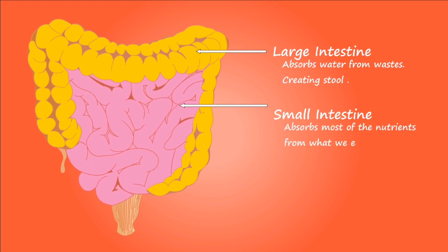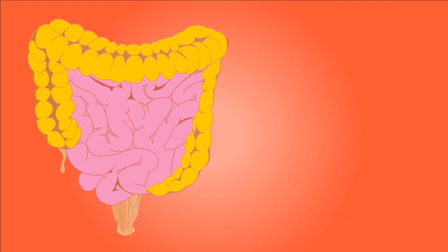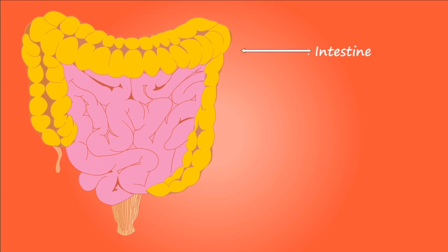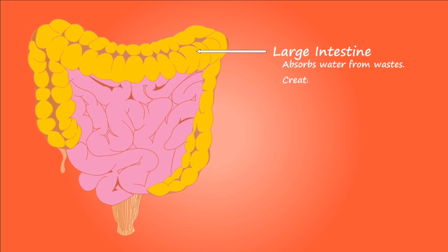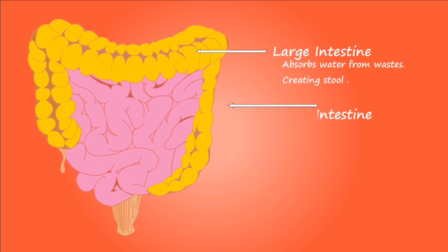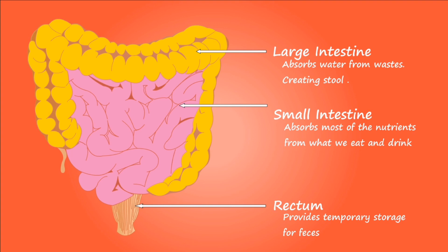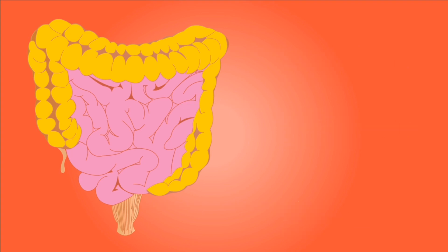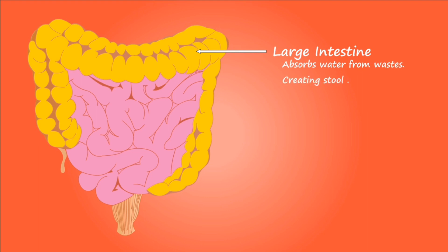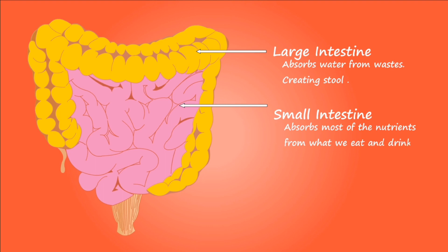The small intestine is divided into the duodenum, jejunum and ileum. The small intestine follows the general structure of the digestive tract, in that the wall has a mucosa with simple columnar epithelium, submucosa, smooth muscle with inner circular and outer longitudinal layers, and serosa. The absorptive surface area of the small intestine is increased by plicae circularis, villi and microvilli.